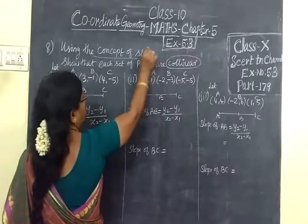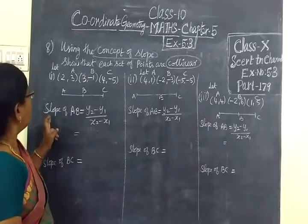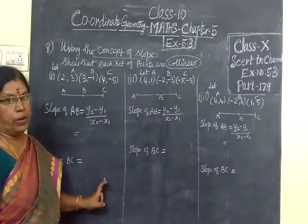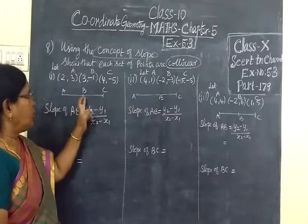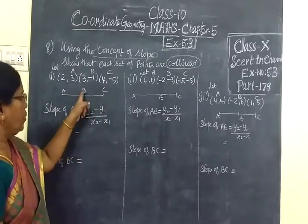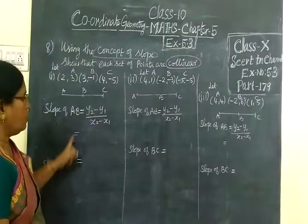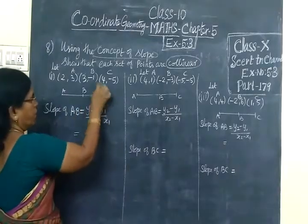So if 2 slopes are equal, the 3 points are collinear. B is the common point. So if 3 points are collinear, AB and BC points are collinear: AB, BC, CA.